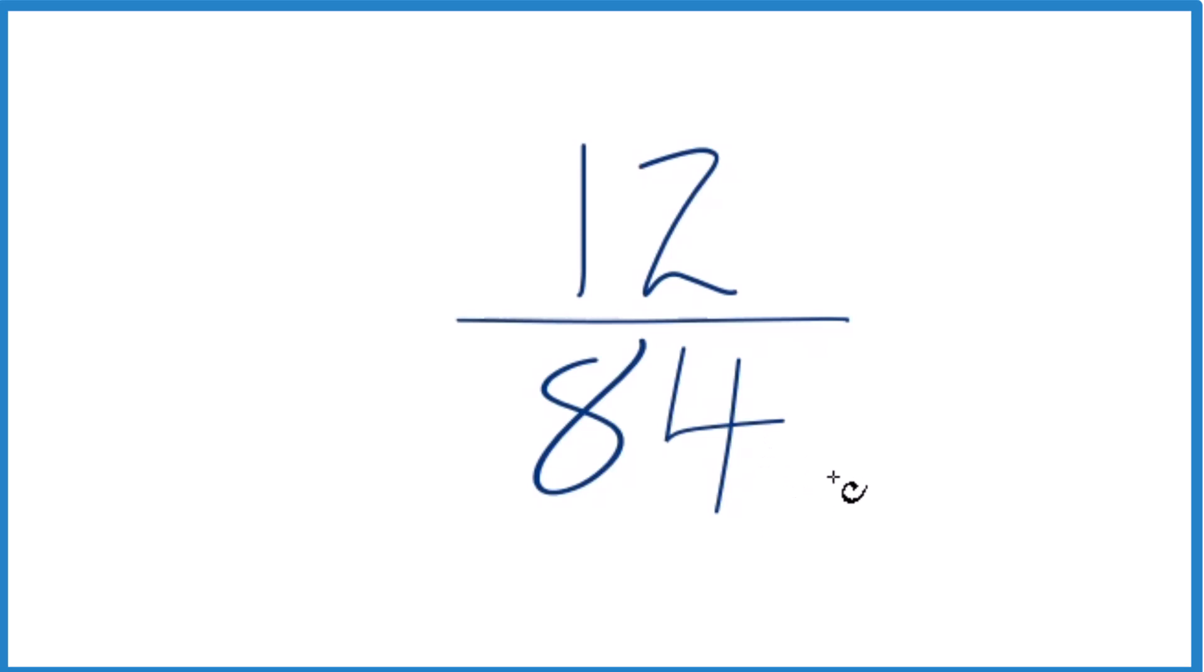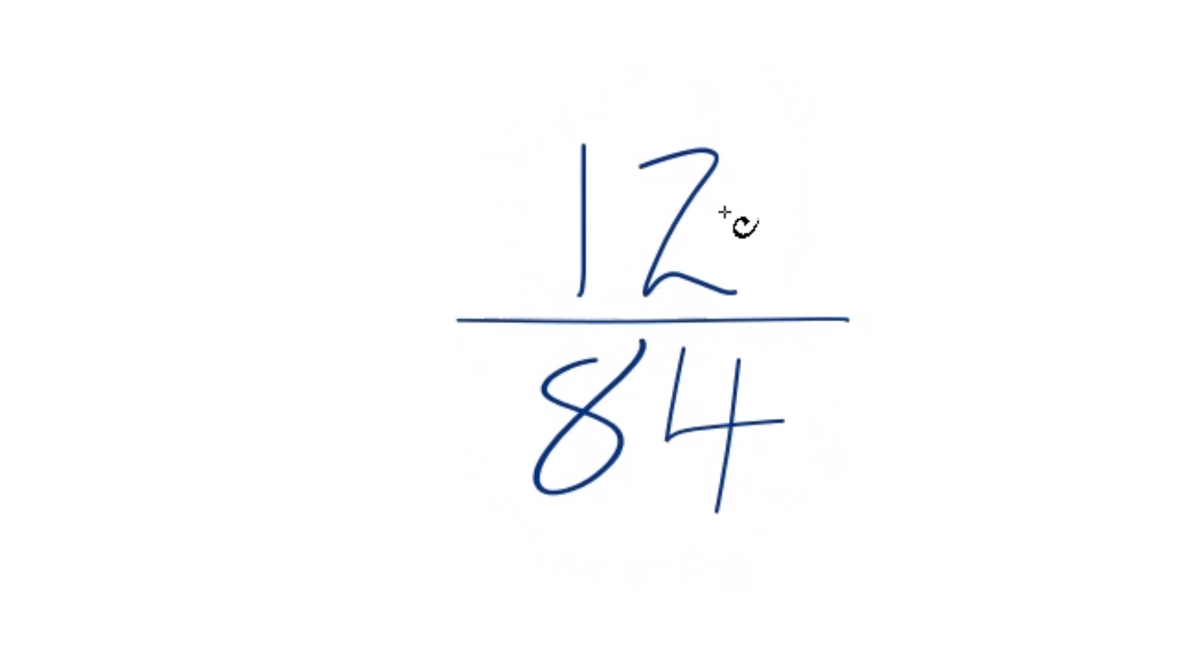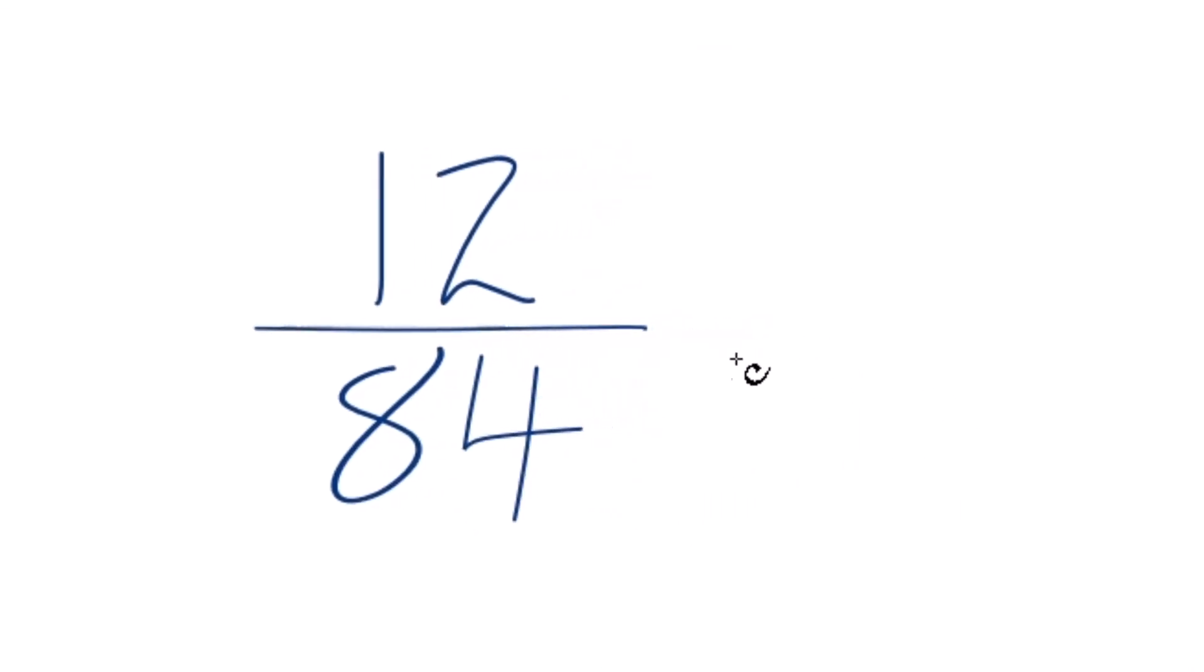So we need to find a common factor, something that goes into 12 and 84 evenly. We're looking for the greatest common factor. If you knew that 12 could be divided by itself and 84 evenly, you could do this. Because 12 divided by 12, that's 1. 84 divided by 12 is 7. So we've simplified 12/84 down to 1/7.